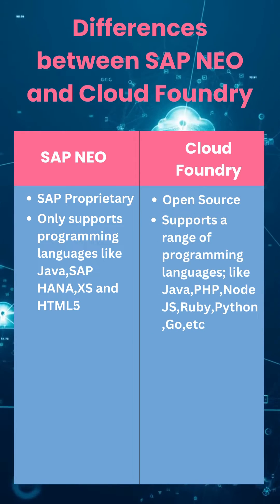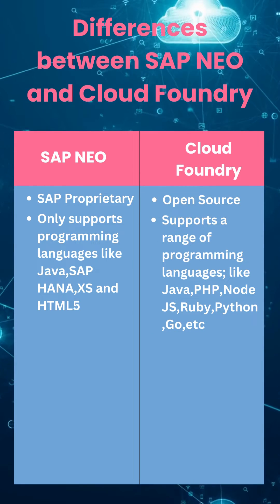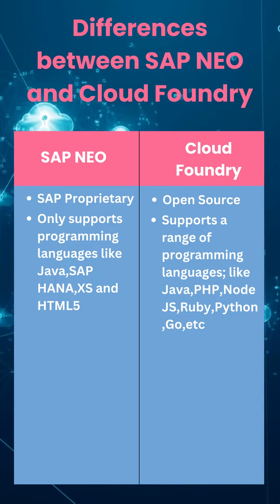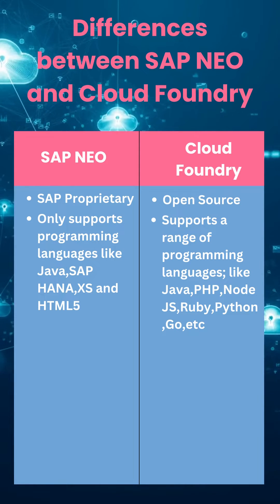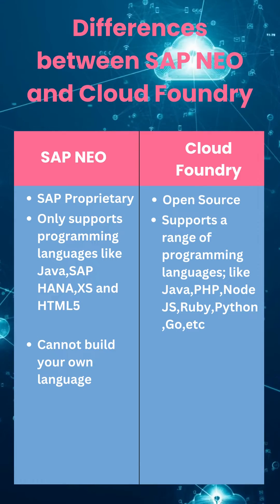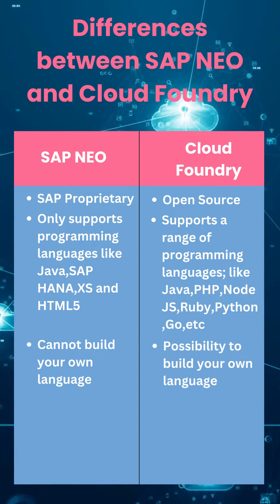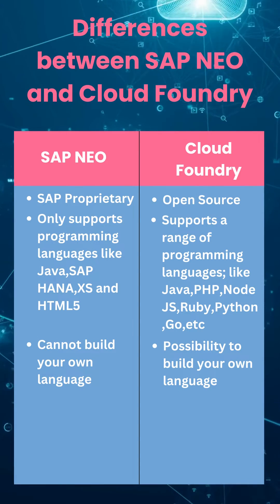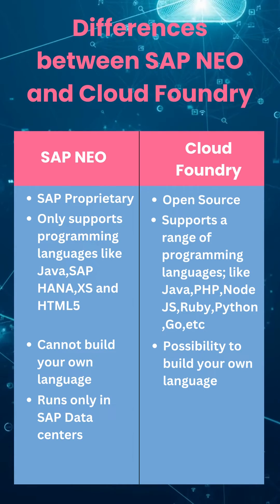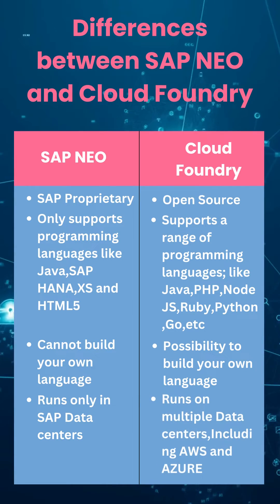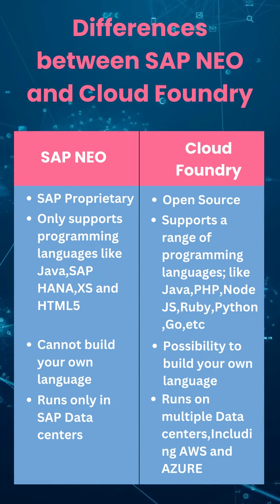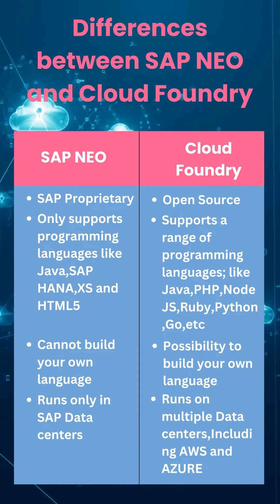Cloud Foundry supports a wider range of languages like Java, PHP, Node.js, Ruby, Python, Go, .NET, and more. On SAP NEO, you cannot build your own programming languages, whereas with Cloud Foundry you can build your own custom languages. SAP NEO applications only run on SAP data centers, whereas Cloud Foundry applications can be deployed on any hyperscaler like AWS, Azure, or GCP.